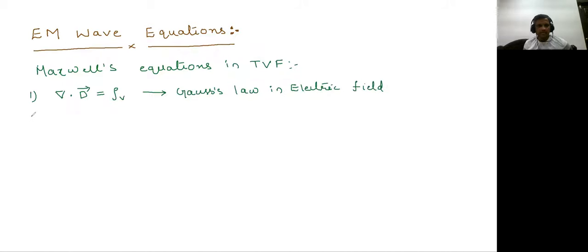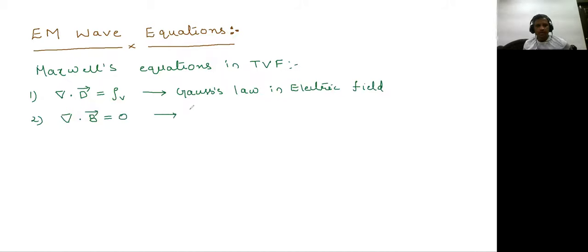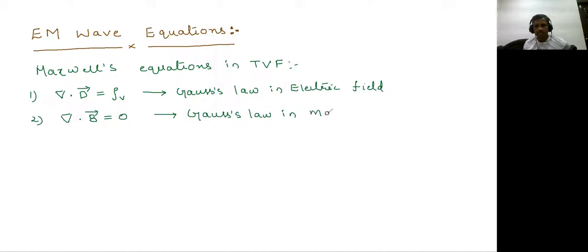The second equation is del dot B is equal to zero. This is also obtained from Gauss's Law, but this is in magnetic field.